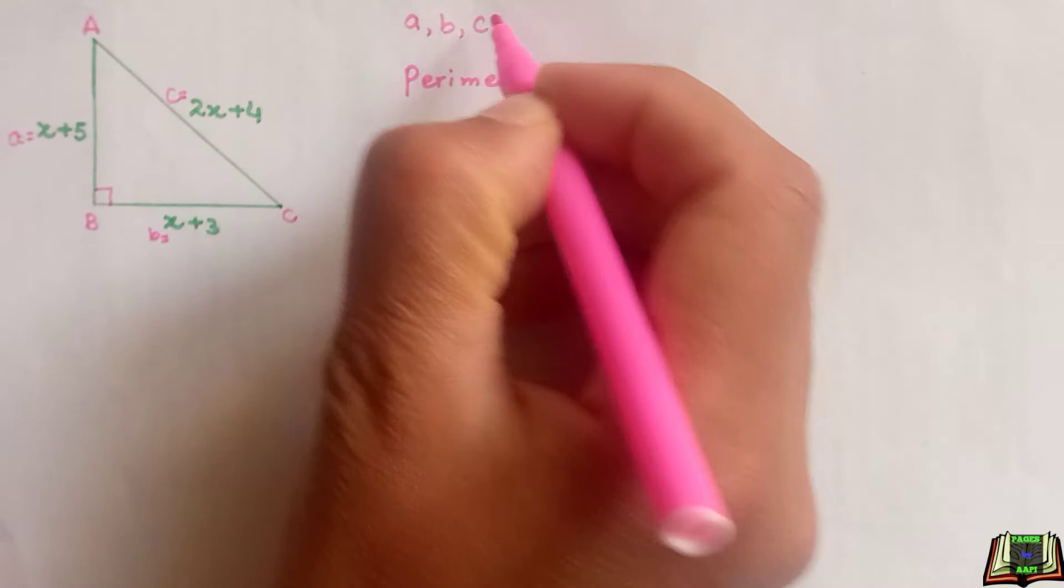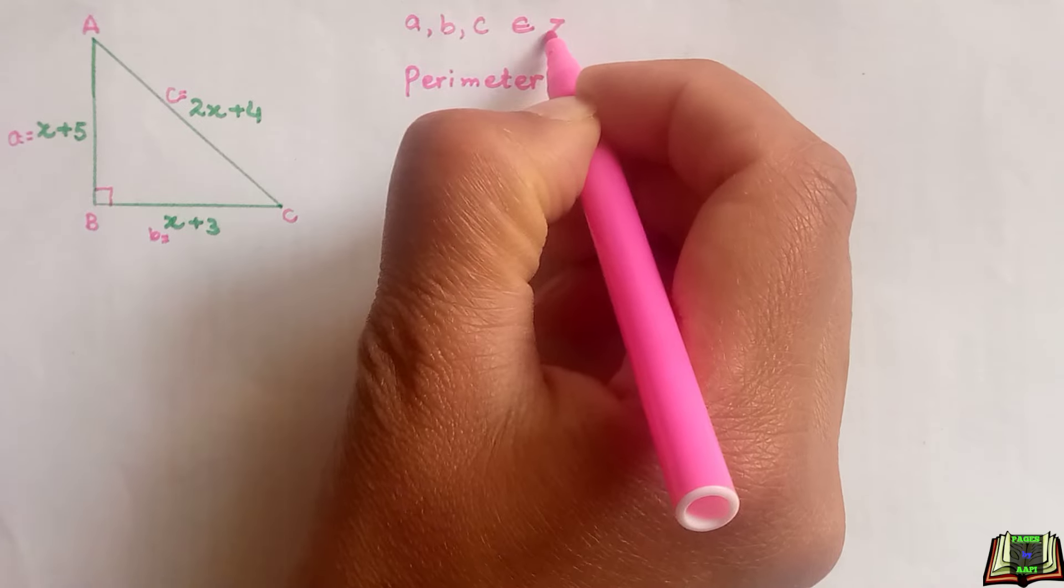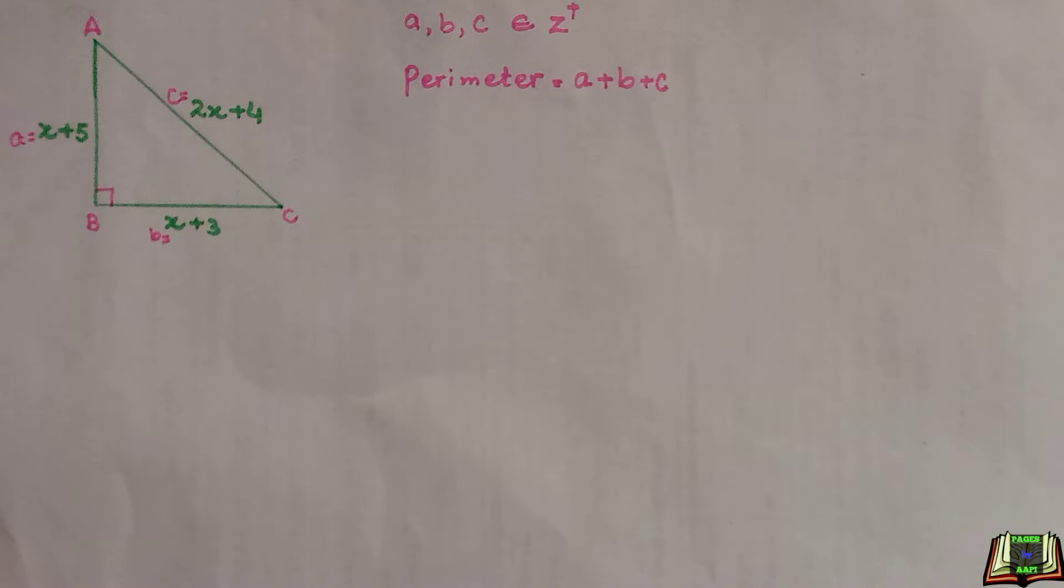Make sure these a, b, and c are the positive integers. So this is the thing we have to find out. We have to find the sum of all three sides, but there are some unknown values in these three sides, that is x.